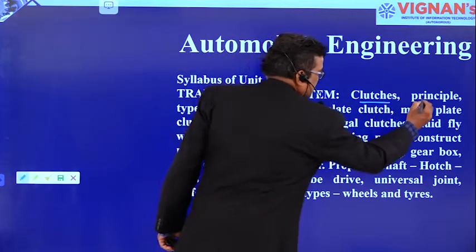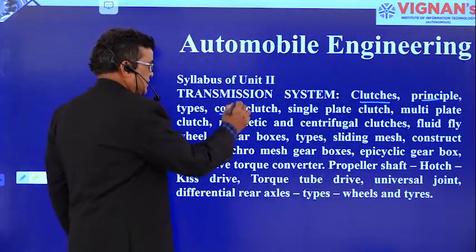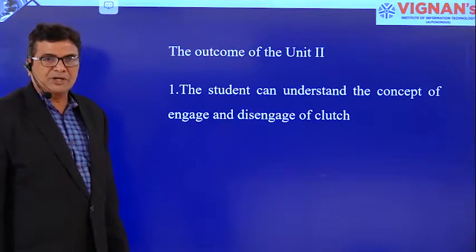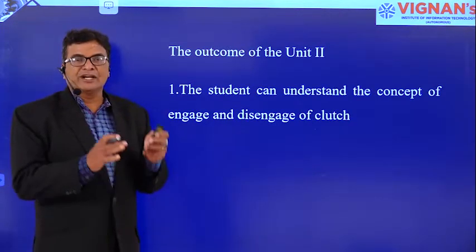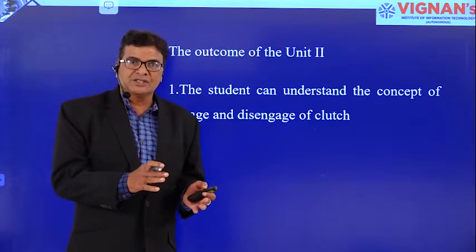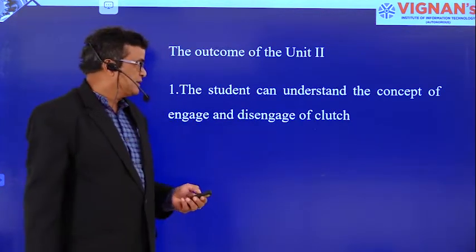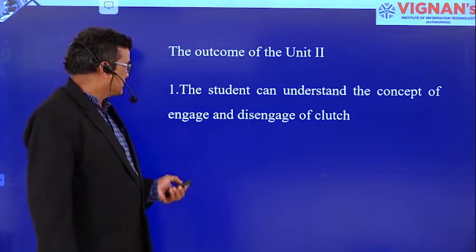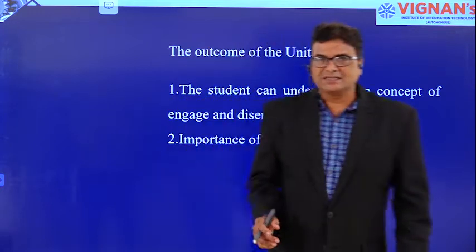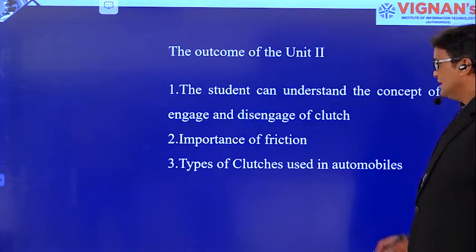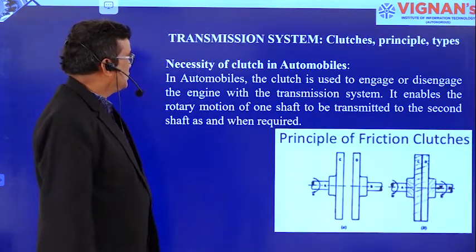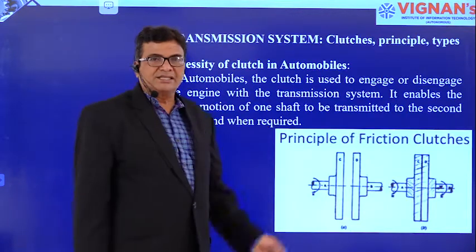Now, clutches — its principle of clutch — and the outcome of unit 2 is like this. The student can understand the concept of engaging and disengaging of the clutch: what is meant by engaging of the clutch, what happens when the clutch is engaged, and disengagement of the clutch — what happens when the clutch is disengaged. This is the outcome of the topic, and importance of friction. So why friction is necessary for a clutch assembly, and types of clutches used in various automobiles.